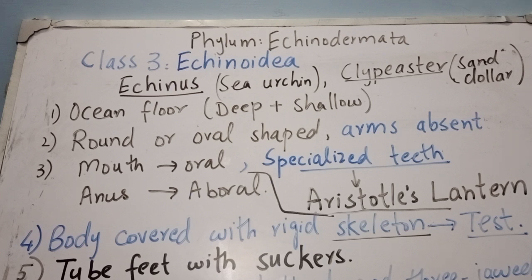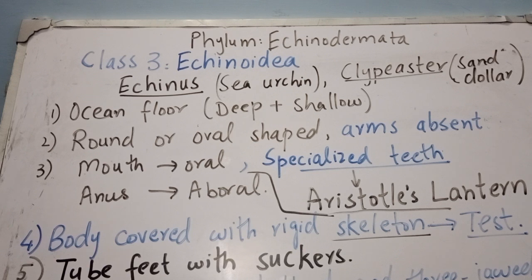In Echinoidea the arms are absent, unlike the first two classes. The mouth is present on the oral side and the anus on the aboral side. The mouth contains specialized teeth used to scrape food particles from rocks — these are the biting and masticatory apparatus known as Aristotle's lantern. This structure is present only in class Echinoidea and is absent in all other four classes, making it a very important diagnostic feature.